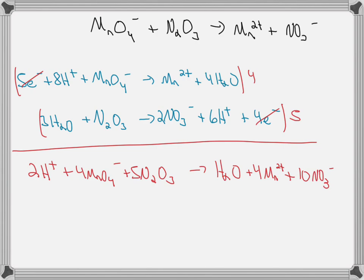So let's make sure it's balanced. We've got two hydrogens, two hydrogens, four manganese, four manganese. 16 plus 15 gives us 31 oxygens, and we've got 30 plus 1 oxygens, and then we've got 10 nitrogens, 10 nitrogens. And what about the charge? We've got two plus minus four, that's minus two. And then we've got eight plus minus 10, that's minus two, so it's balanced.